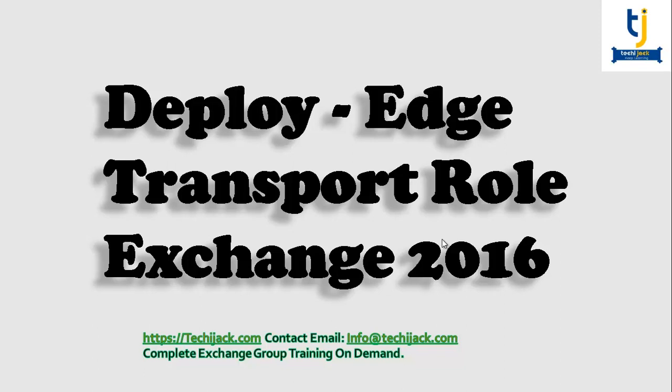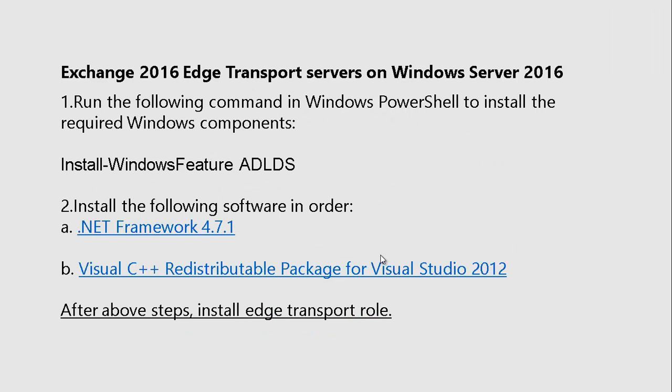Hello friends and welcome to Techie Jack. In this video we are going to deploy our edge transport server role for Exchange Server 2016. Before moving ahead, there are a few requirements for the edge transport server role. Those requirements include the ADLDS feature, because our edge transport server has to communicate with Active Directory. We also need a DNS entry, a DNS suffix on our edge transport server, and we need to install .NET Framework and Visual C++ Redistributable package. Once all these are in place, we can install our edge transport server role.